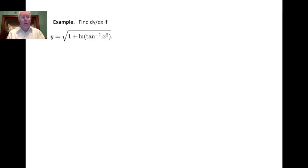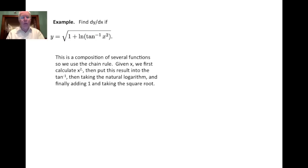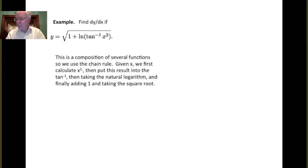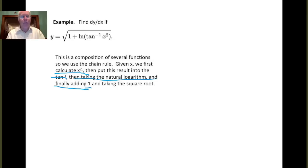We'll conclude with an example using the derivative of the inverse tangent function. Let's find dy dx if y equals the square root of 1 plus the logarithm of the inverse tangent of x squared. This is a pretty complicated-looking structure with a lot of compositions involved. We first calculate x squared, then put this result into the inverse tangent, then take the natural logarithm and add 1, and then put all of that into the square root function.